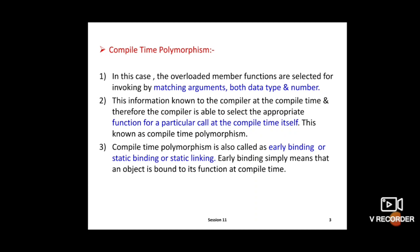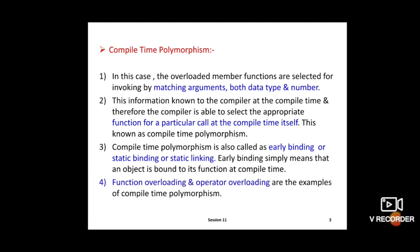Compile time polymorphism is also called early binding or static binding or static linking. Early binding means that an object is bound to its function call at compile time. This is before the running process, so it is called early binding. Examples are function overloading and operator overloading.